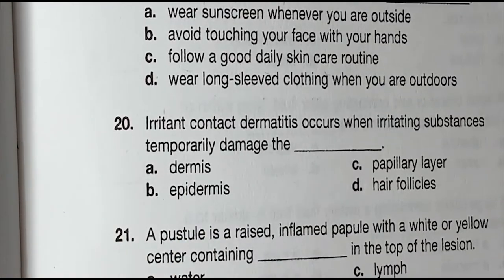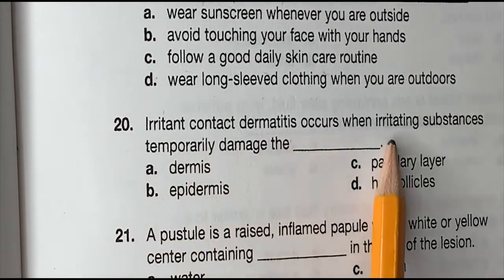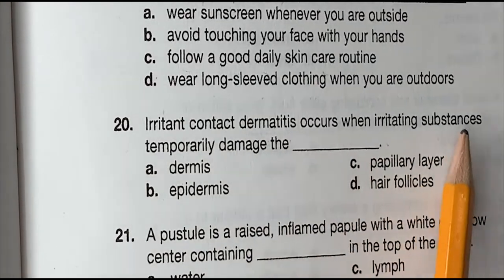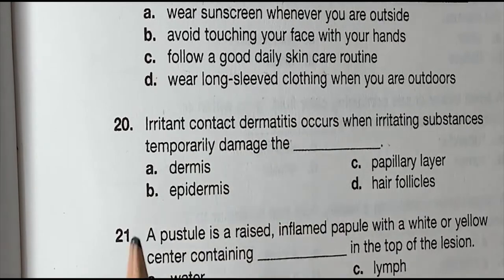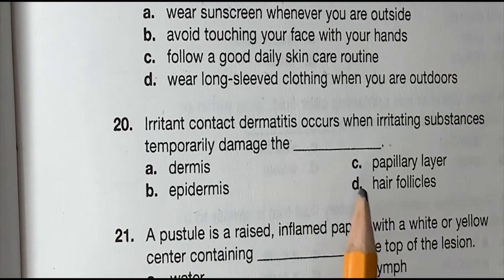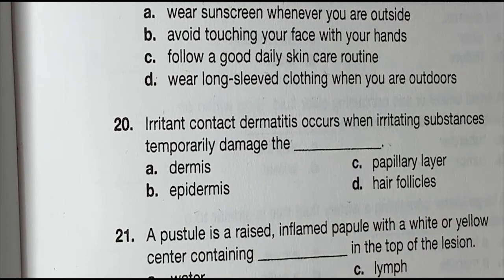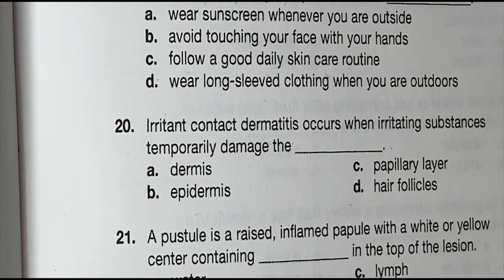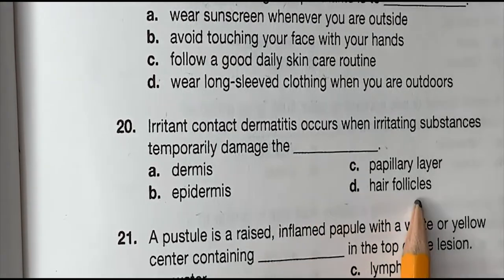Question 20: Irritant contact dermatitis occurs when an irritating substance causes temporary damage to blank. Is it A, dermis. B, epidermis. C, papillary layer. Or D, hair follicles. And the correct answer is D, hair follicles.